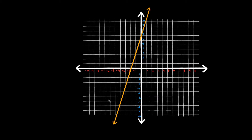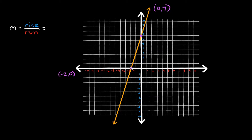Let's try another example. The formula is still m equals the rise over the run, where the rise is the vertical change and the run is the horizontal change. The first thing we do is find two points the line runs through — the x-intercept and y-intercept are good places to look. Here the line runs through negative two comma zero and zero comma seven.